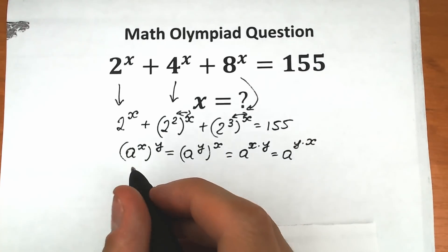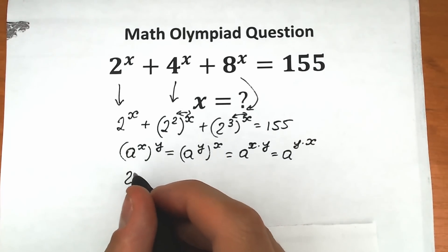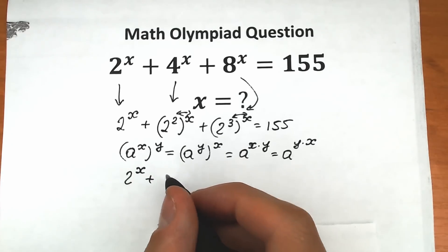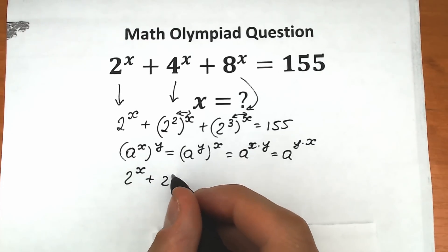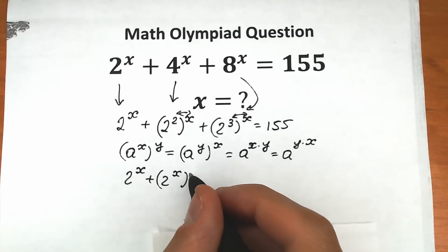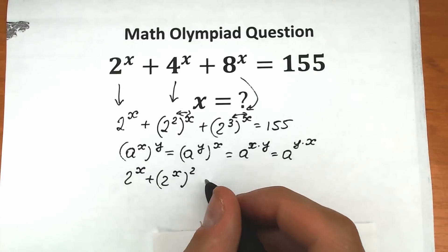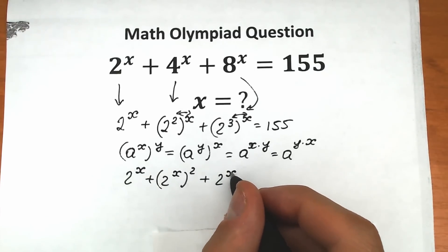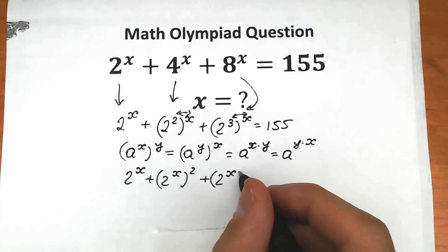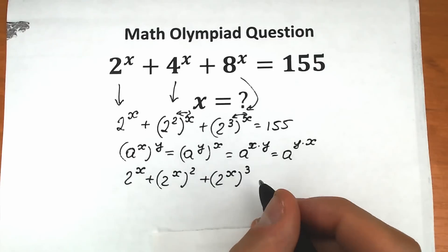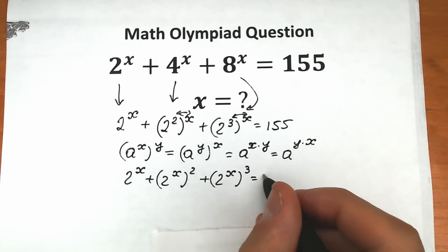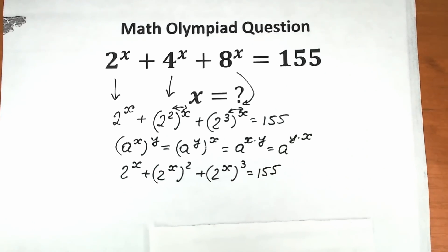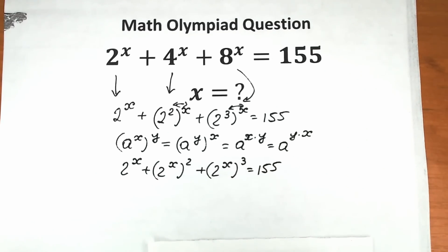So what do we have now? We have 2 to the x, plus 2 to the x squared, plus 2 to the x cubed, which is equal to 155. This is our expression after applying the interchange rule.